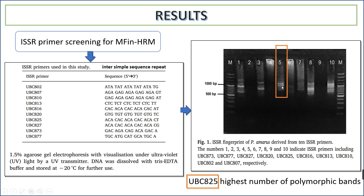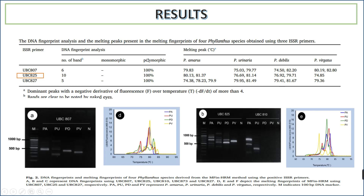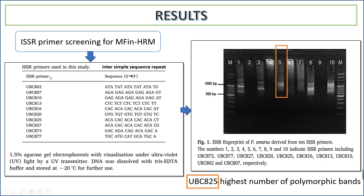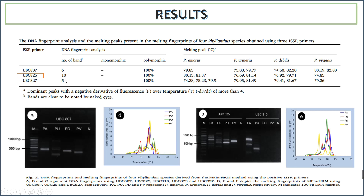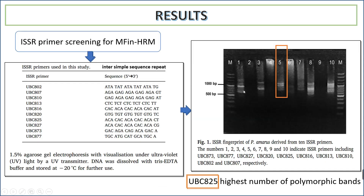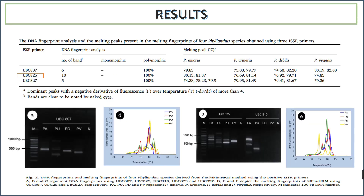UBC825 showed the highest number of polymorphic bands. From 10 initial primers, we selected three primers with the best results. We then ran electrophoresis again and performed real-time PCR with fluorescent dye, detecting the high resolution melting signal on the melting peak.